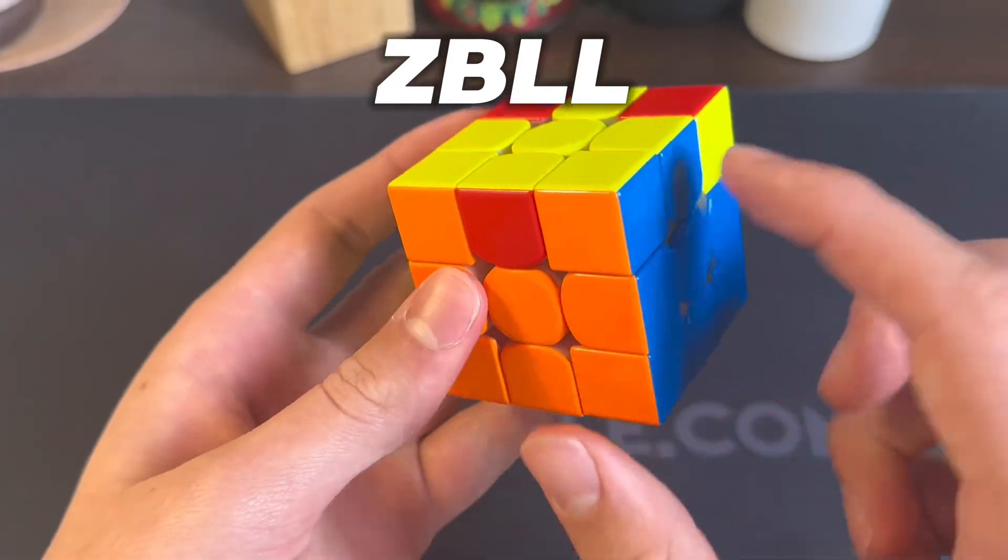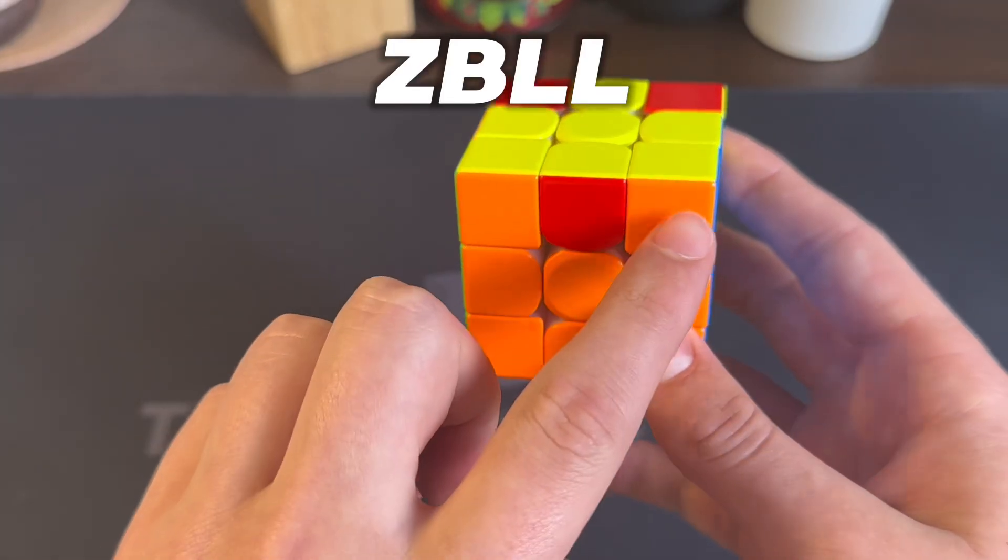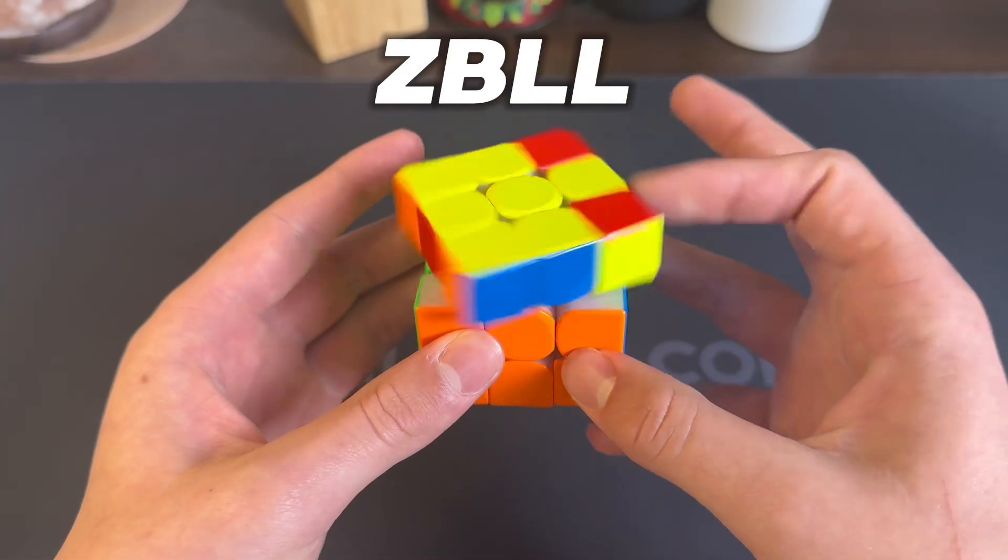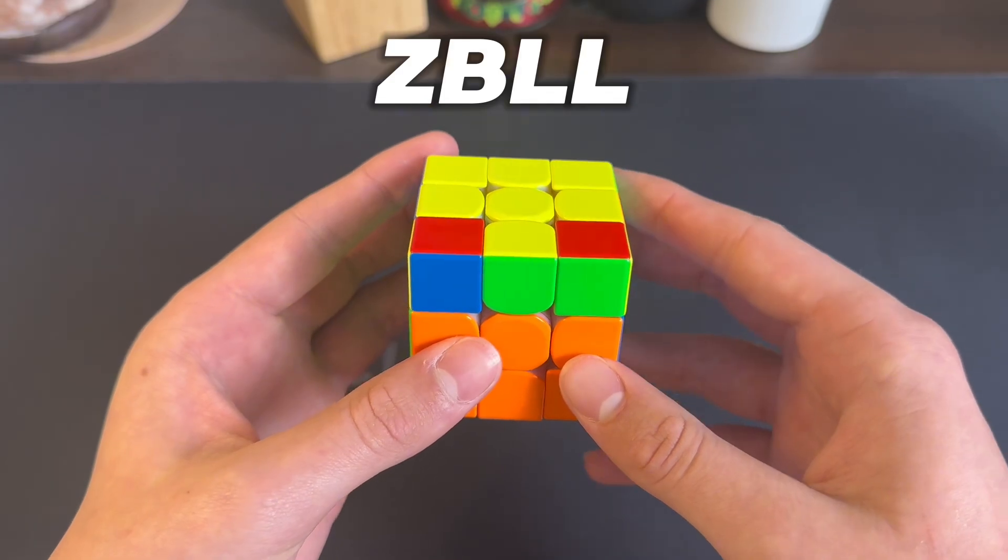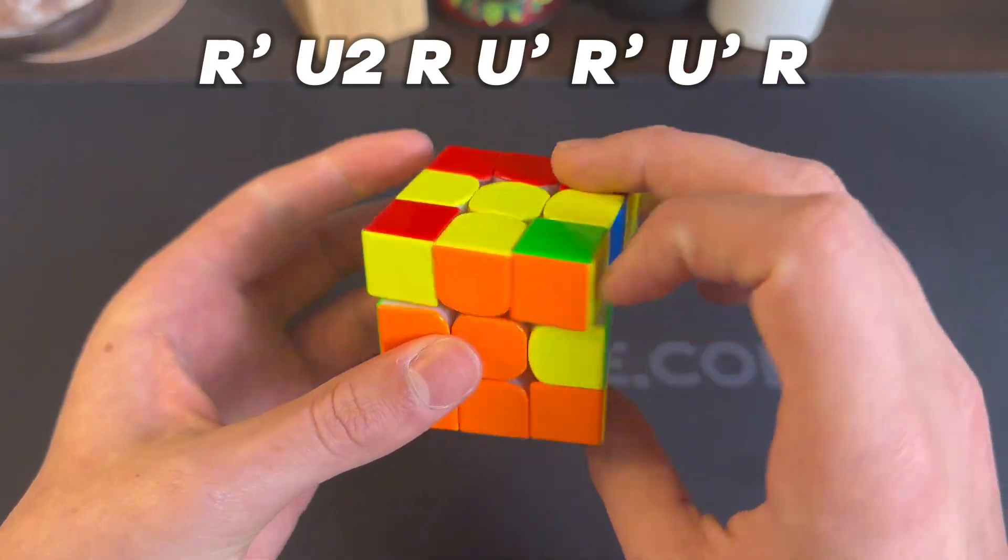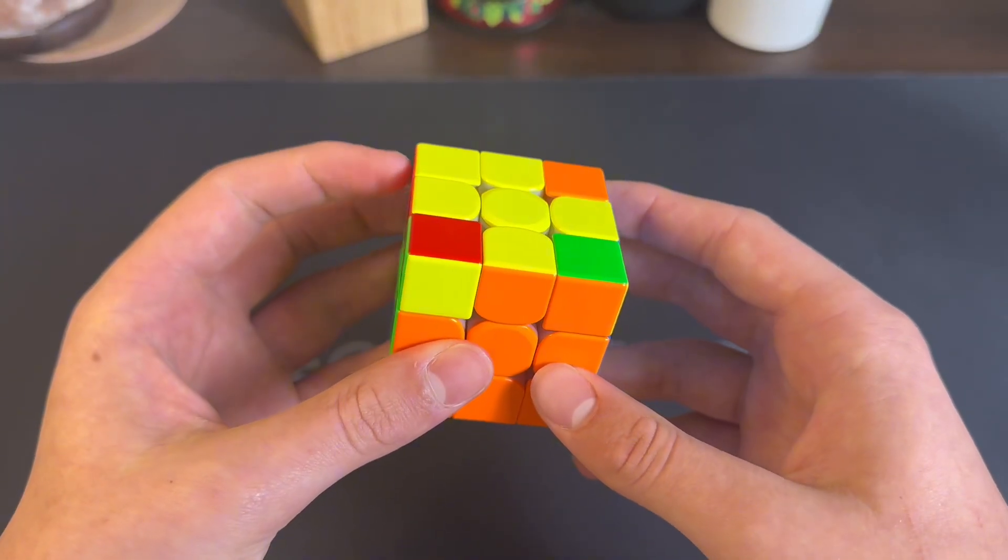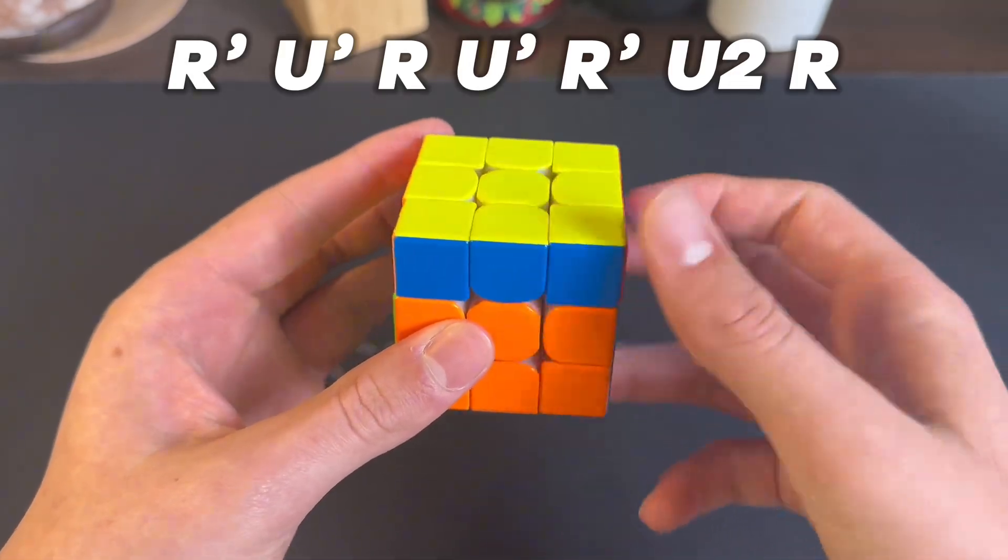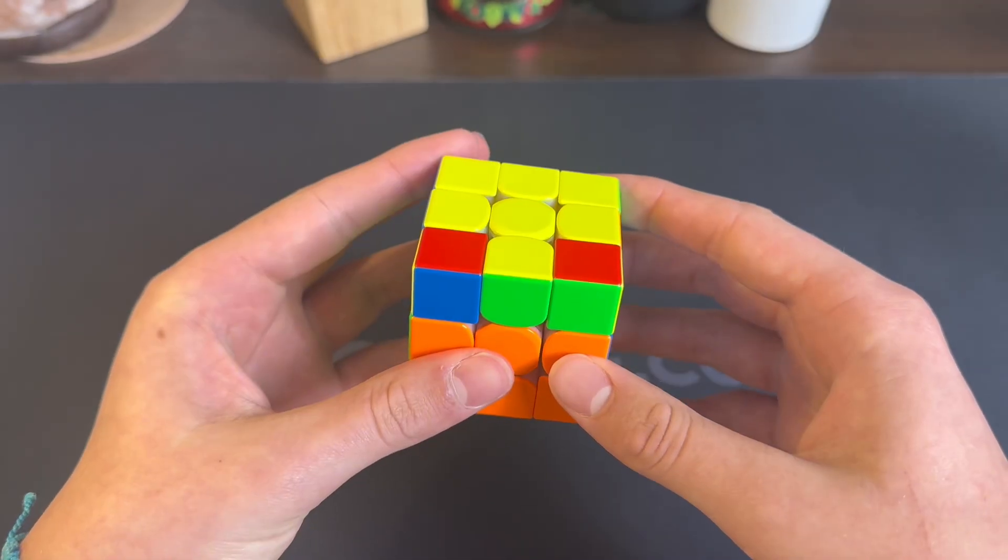So this is my recognition angle. I do a U2 from it. First I do a back anti-sune, U prime into back sune, and then U prime AUF. Faster, it looks like this.